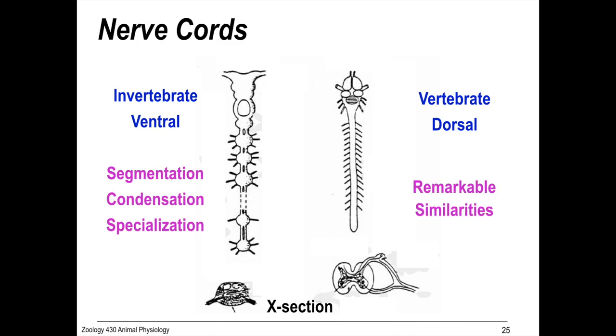And specialization among body segments, and integration along the nerve cord. However, the invertebrate nerve cord is located ventrally, whereas the vertebrate is dorsally located.